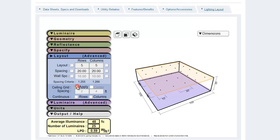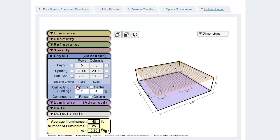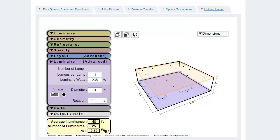For a recessed luminaire, a grid ceiling can be applied. Here we see luminaire information and have the ability to change luminaire rotation.